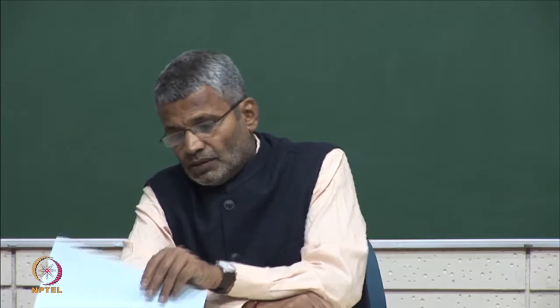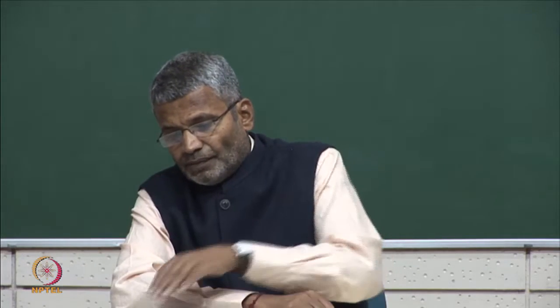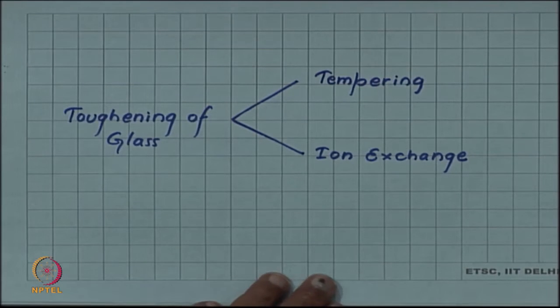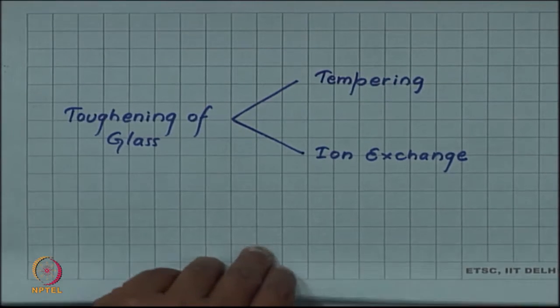Let us consider toughening of glass by ion exchange. We have already considered the process of tempering which is a physical process for toughening of the glass. Ion exchange is a chemical process.